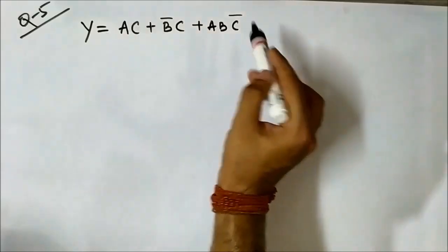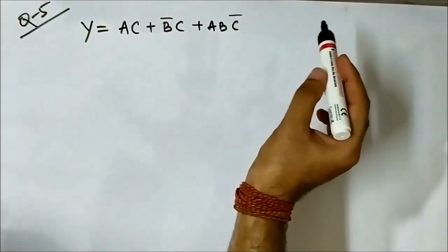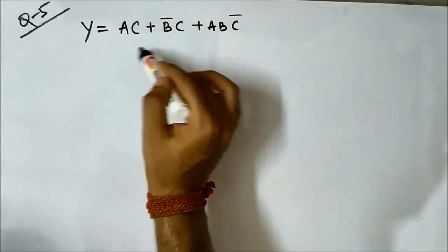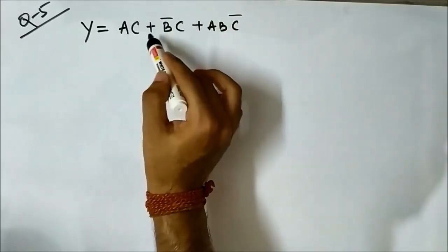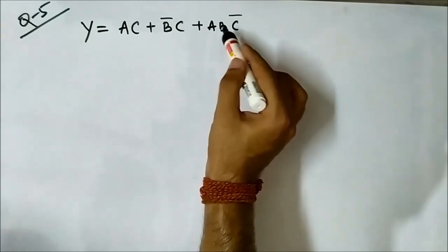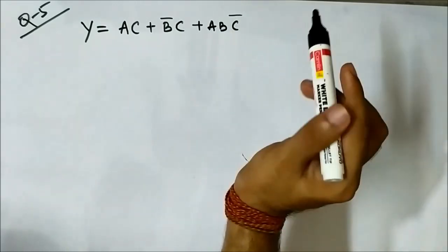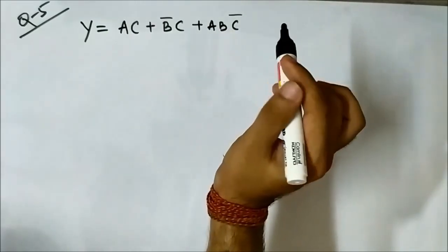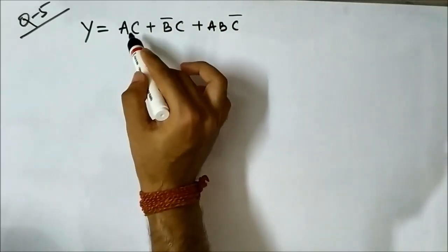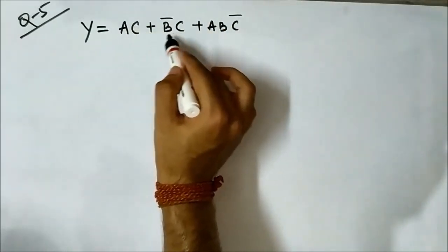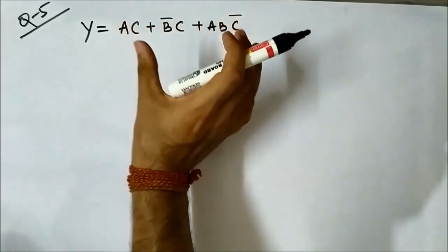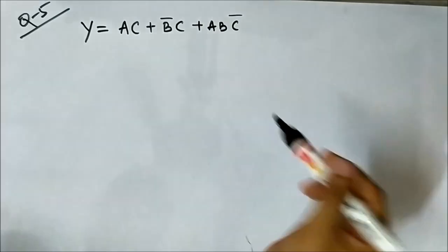Here we have a three-term Boolean expression. The first two terms have two variables each, and the third term has three variables. It is a mixture of AND and OR — the variables within each term are in AND form, and the three terms are joined together by OR.